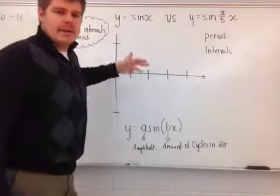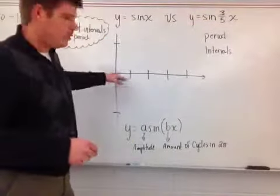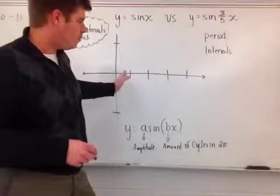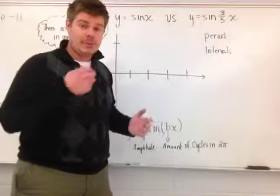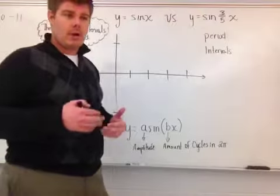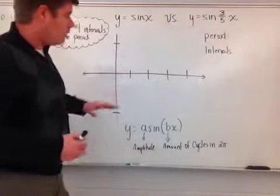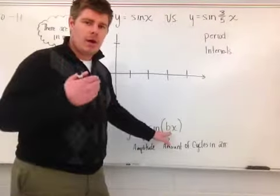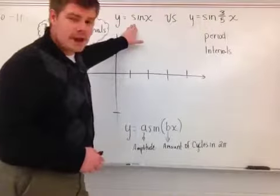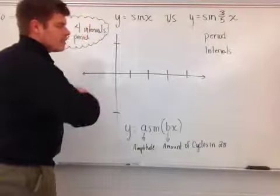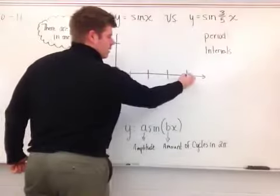Relating back to the unit circle — the unit circle is broken into four quadrants, which is why on my graph the starting point to the end point is broken into four equal increments. That is connected to the unit circle and the quadrantal angles. When b equals one in the regular sine function, there is one cycle — starting at zero, going up, coming back down to zero, going down, and back up.